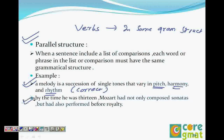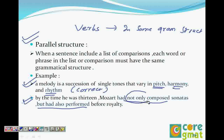The second sentence: 'By the time he was 13, Mozart had not only composed sonatas, but had also performed before royalty.' Here 'composed' is a verb and 'performed' is a verb, so the list is in the same grammatical form. When you say 'not only,' we always say 'but also.' Both 'but also had' and 'but had also' are correct.